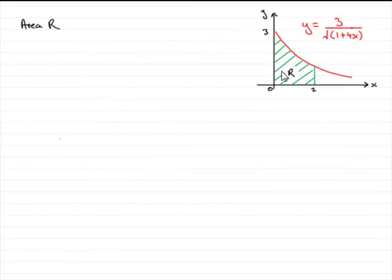So we need to work out this area R. How are we going to do it? Well, the area of any curve or any space like this underneath the curve bounded by two lines and the x-axis is the integral of y with respect to x. The limits go from 0 to 2.